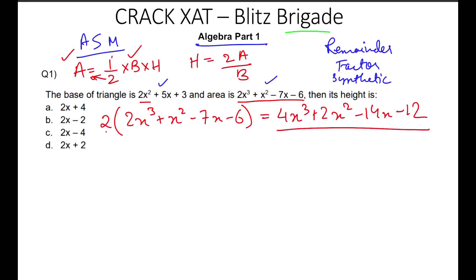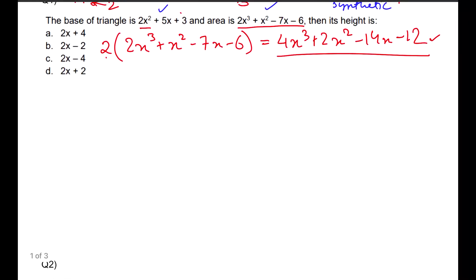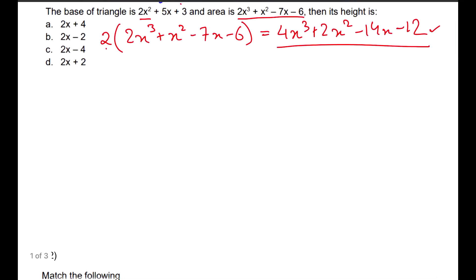So we'll make it as 4x³ + 2x² − 14x − 12. This is the area-times-2 value — that is the numerator of my formula. Now the denominator is b, which remains constant. So basically, I have to divide this equation by that. I'm going to show you the division process, the normal division process. Always remember or know the actual process before you get down to any theorem or shortcut method, because sometimes shortcuts might not work but the original method, though time-taking, will ensure your mark.